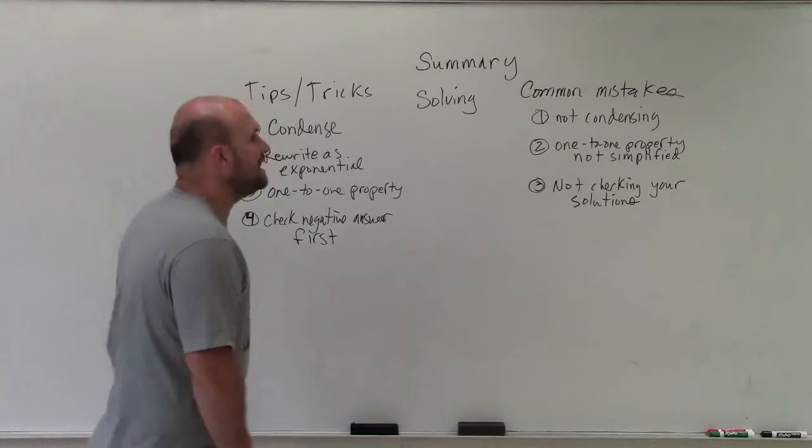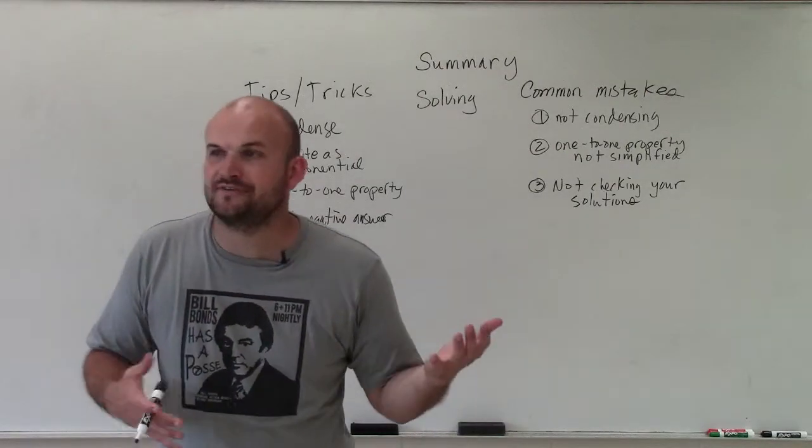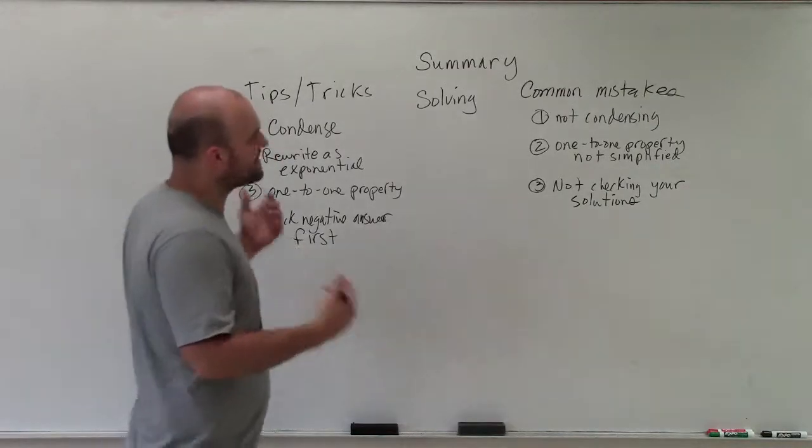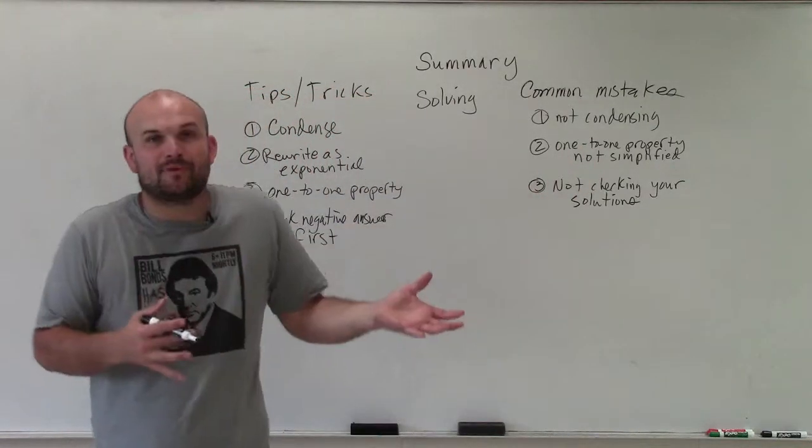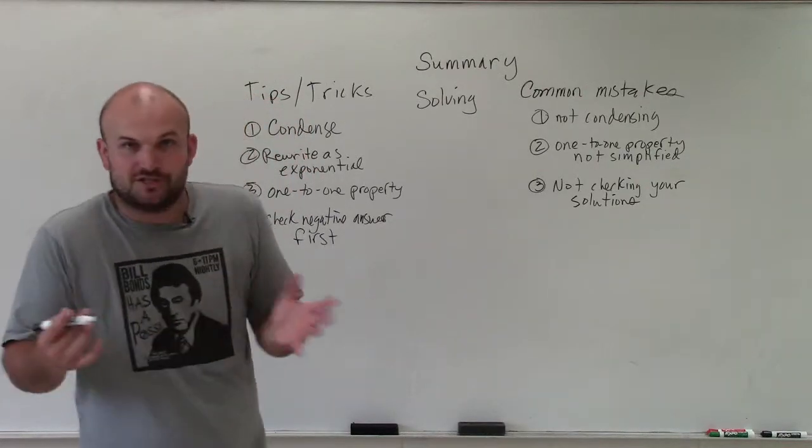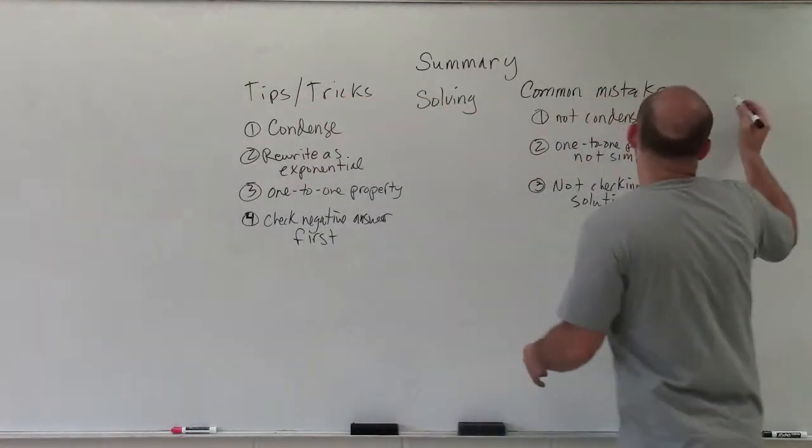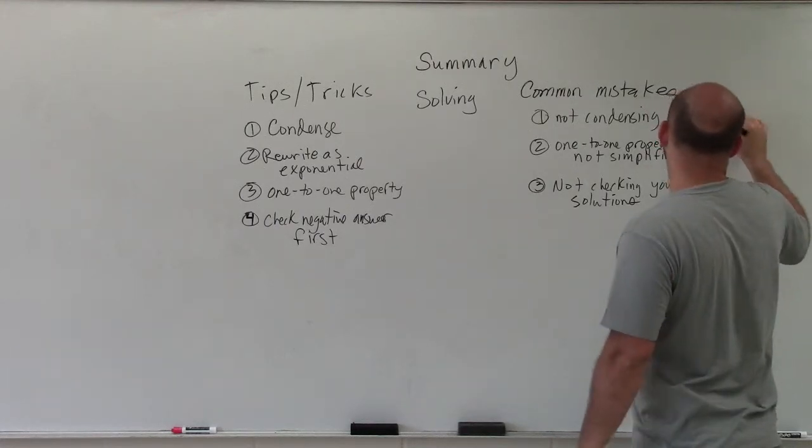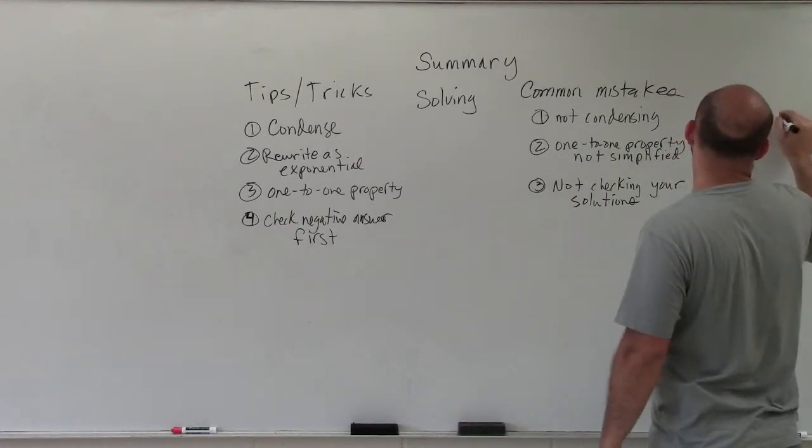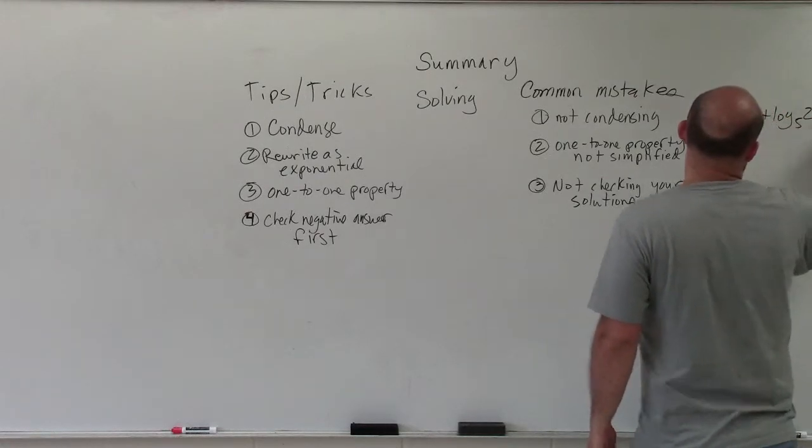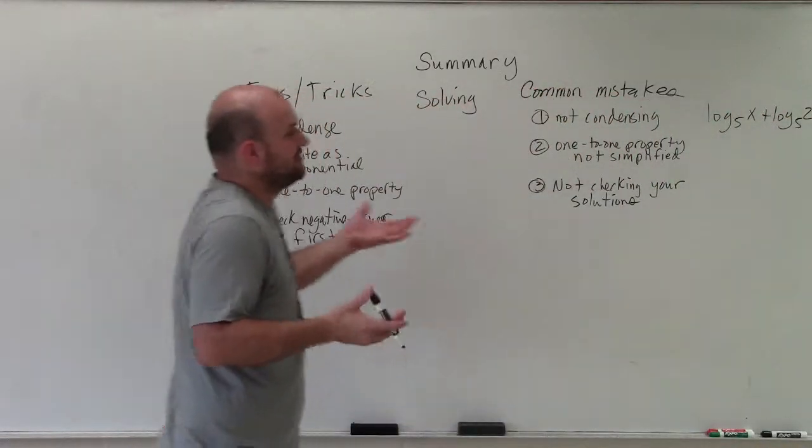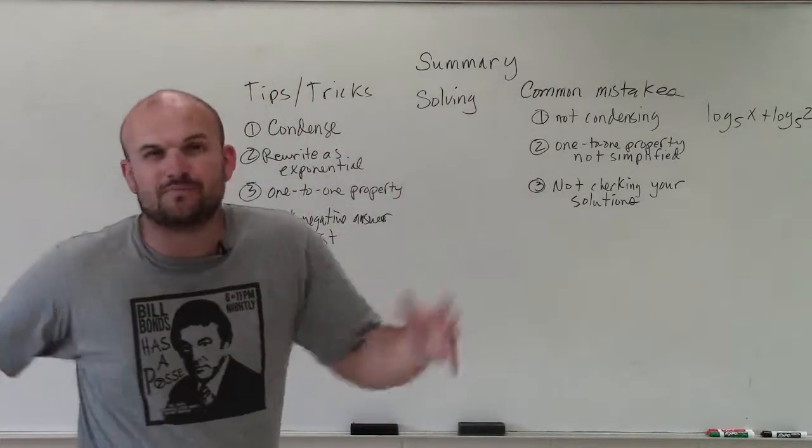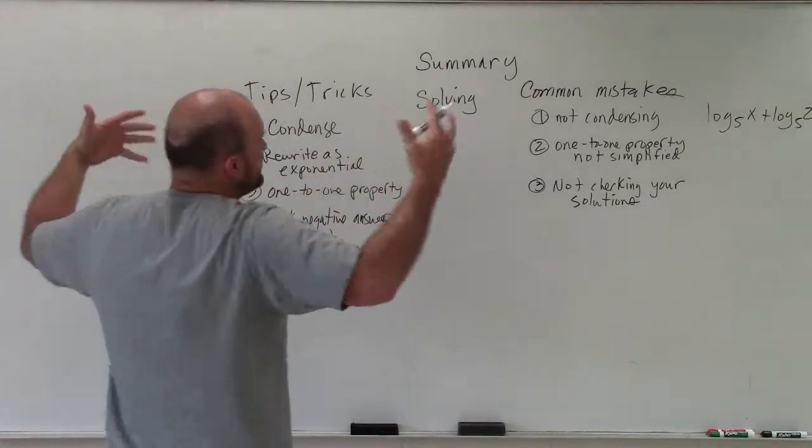All right, now let's get into some common mistakes. And this pretty much goes off of exactly what's not doing your tips and tricks. Your common mistakes are not condensing. I see people apply operations, and they just don't condense. For instance, log base 5 of x plus log base 5 of 2 equals 1. And they just don't even condense. They just go ahead and maybe solve like zero product property, or they rewrite to exponential form, but they don't condense it. So make sure you condense it.